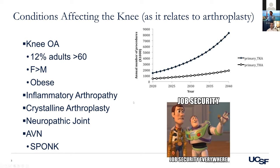As obesity increases, more and more knee problems arise compared to hip. The hip is a little more protected and doesn't see as much day-to-day stress. Hip arthritis is more often a developmental issue or a cartilage issue we haven't figured out yet — there's more family history in hip arthritis than knee arthritis. Beyond simple OA, the knee can be affected by inflammatory arthropathies and crystalline arthropathies. Pseudogout is probably underdiagnosed; a study found 50% of arthritic knees had pseudogout crystals at the time of joint replacement. AVN and neuropathic joints are also relevant.